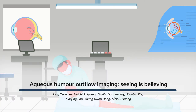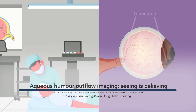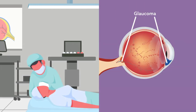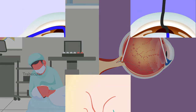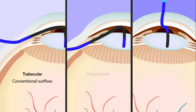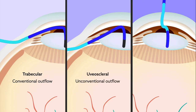Over the past decade, a variety of new drugs and surgical techniques have been developed to lower intraocular pressure and treat glaucoma. This trend has reinvigorated interest in understanding how and where aqueous humor outflow occurs. Three main pathways are currently known: trabecular or conventional outflow, uveoscleral or unconventional outflow, and subconjunctival outflow.